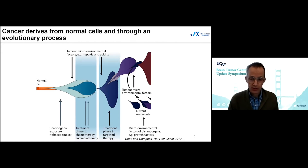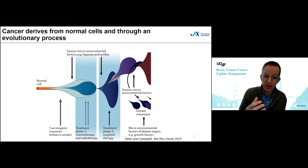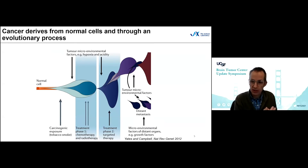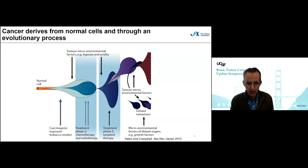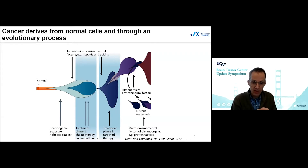Cancer derives from normal cells through an evolutionary process. Our knowledge so far is entirely based on untreated tumors at diagnosis, but the cancer doesn't stop evolving there. Hypermutation is a reflection of an evolving tumor — a subclone that acquires the hypermutation phenotype is able to out-compete other cells, so tumor recurrence is predominantly made up of cells with this hypermutation representation. Treatment can create evolutionary bottlenecks, as can hypoxia, radiation, and even surgery itself.